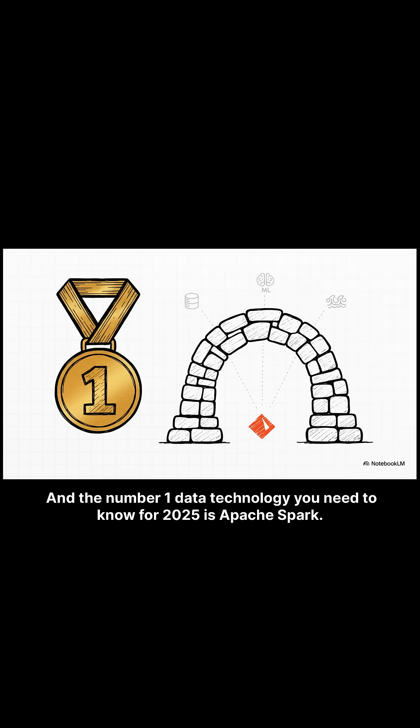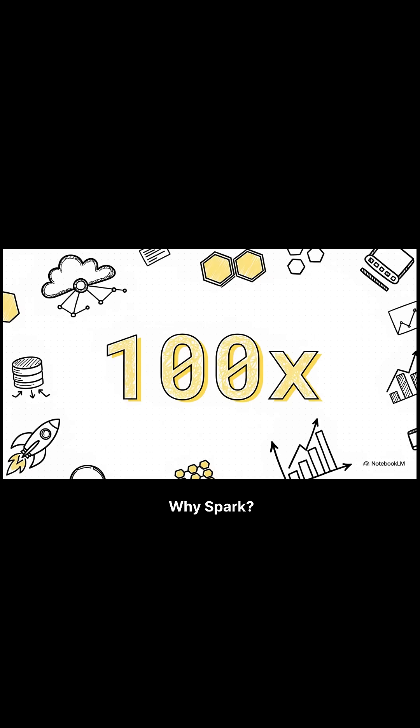And the number one data technology you need to know for 2025 is Apache Spark. Why Spark? Its in-memory processing crushes big data tasks up to 100 times faster than the old ways.